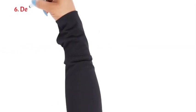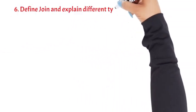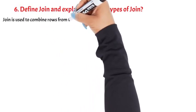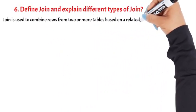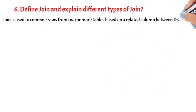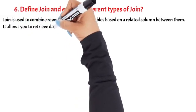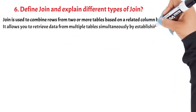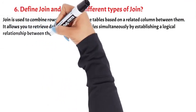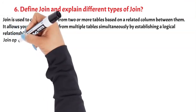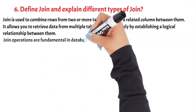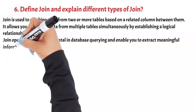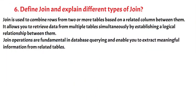Question 6: Define JOIN and explain different types of joins. JOIN is used to combine rows from two or more tables based on a related column between them. It allows you to retrieve data from multiple tables simultaneously by establishing a logical relationship between them. JOIN operations are fundamental in database querying and enable you to extract meaningful information from related tables.